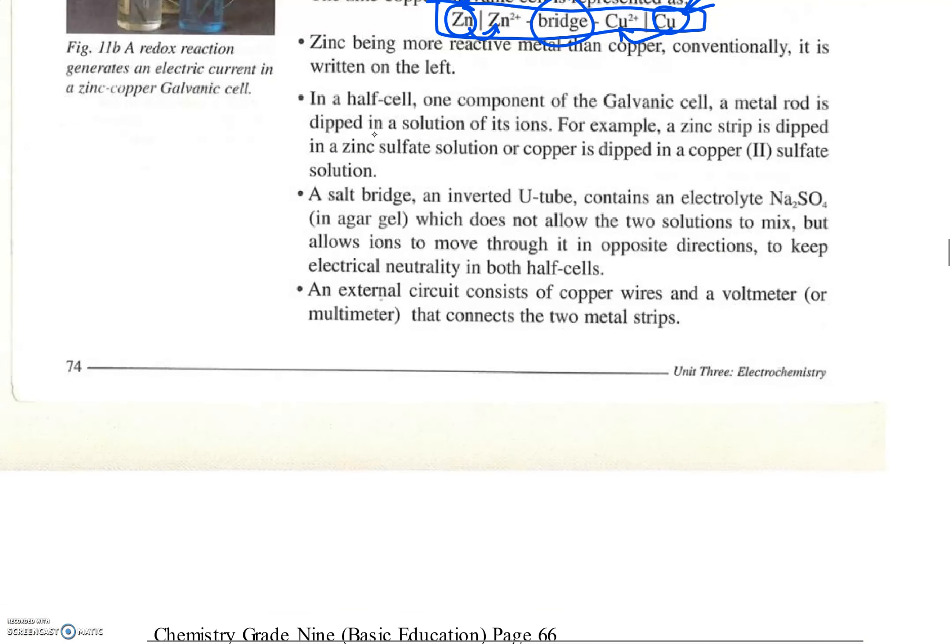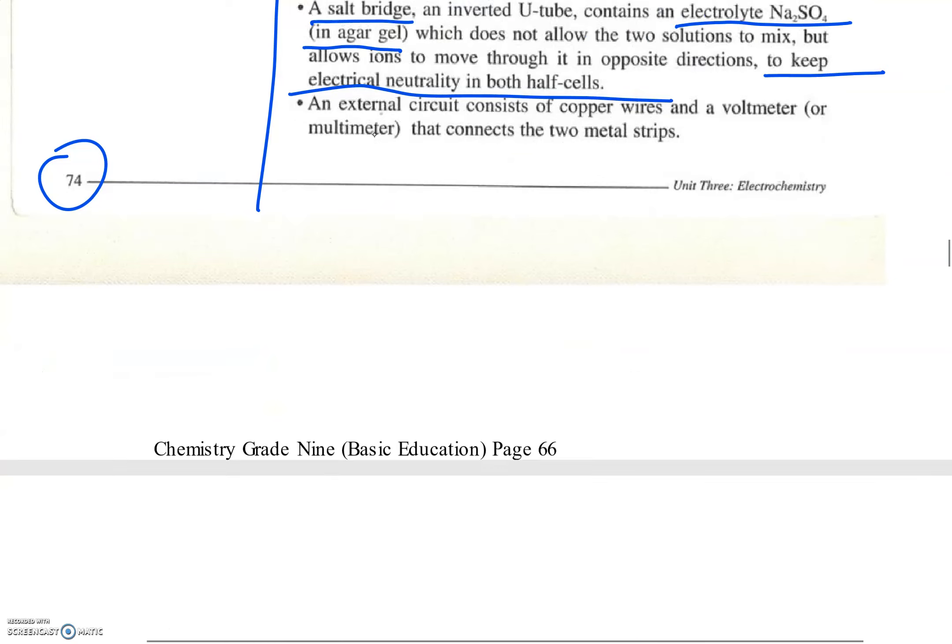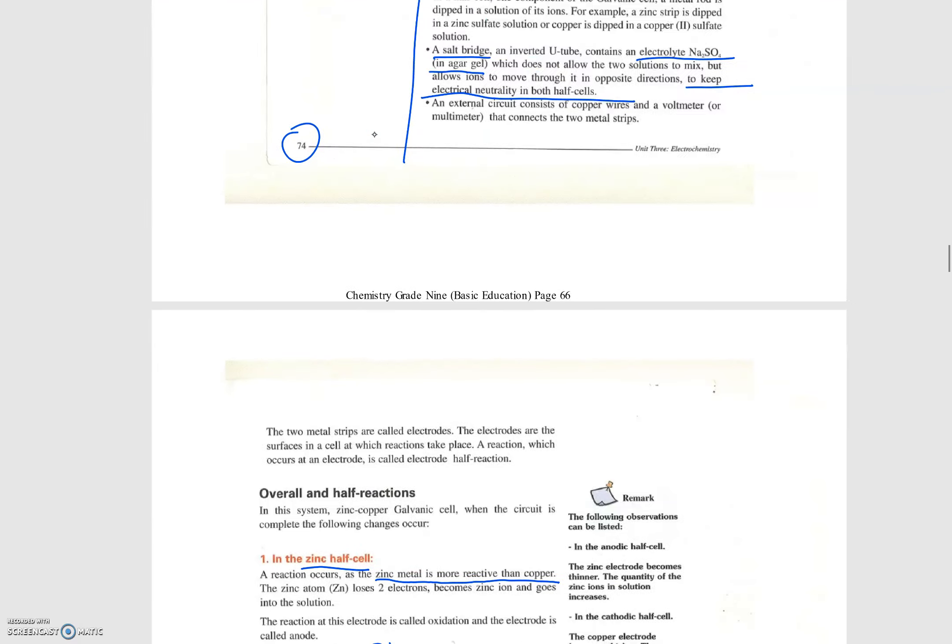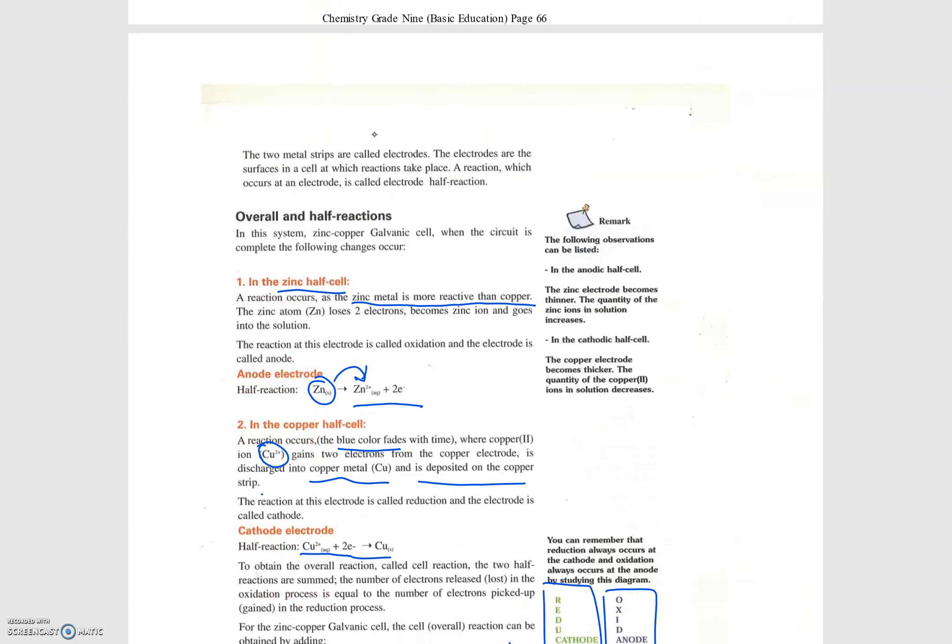It's good to read and study these paragraphs on page 74 and 75. In the salt bridge we have what we call the agar gel, so it's not a liquid containing an electrolyte Na2SO4, and we need to study its function to keep the electric neutrality in both half cells. Please study them well and good luck.